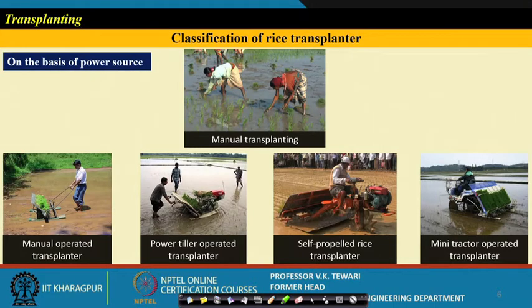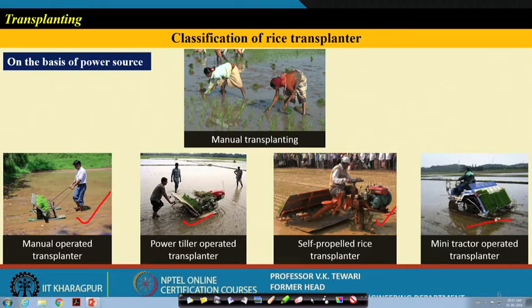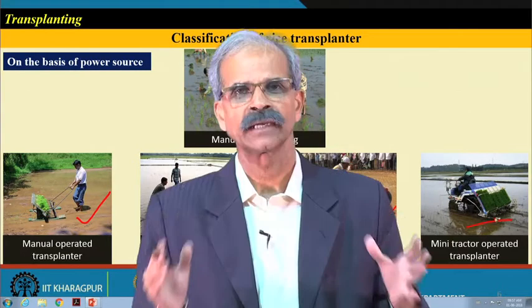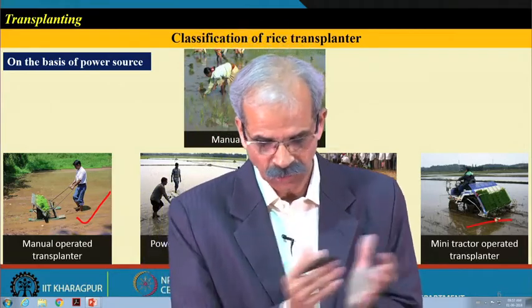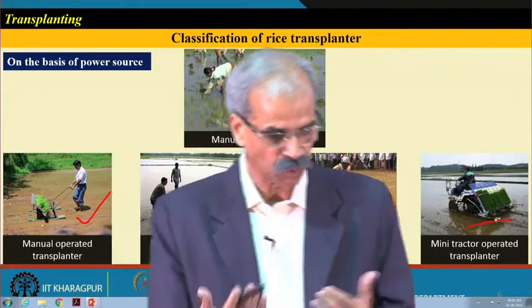Regarding the classification of transplanters: manual transplanting is mostly done by ladies. Then there are manually operated transplanters, power tiller-mounted ones, self-propelled ones which are very popular in Asian countries, and mini tractor-operated transplanters. On the basis of the power source, this slide gives you an overview of all the methodologies and equipment available at one place, which is very beneficial.